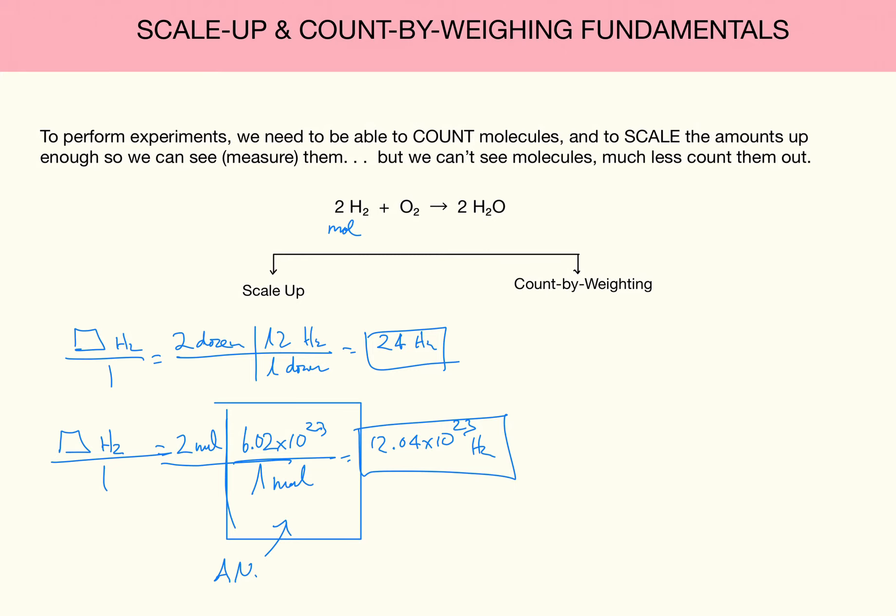Well, that's the one problem remedied. We can scale it up. Now how can we actually make sure we have a ratio of two of these for every one of these for every two of these? That ratio has to be perfect. But yet in the real world we can only weigh things. We can't count them. I can't count out that many molecules. I have to weigh them out. So how are we going to handle that concept called count by weighing? And let me illustrate it.